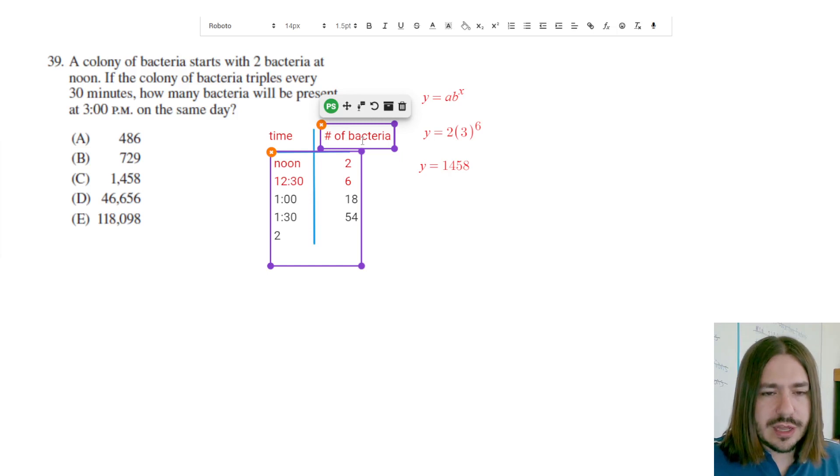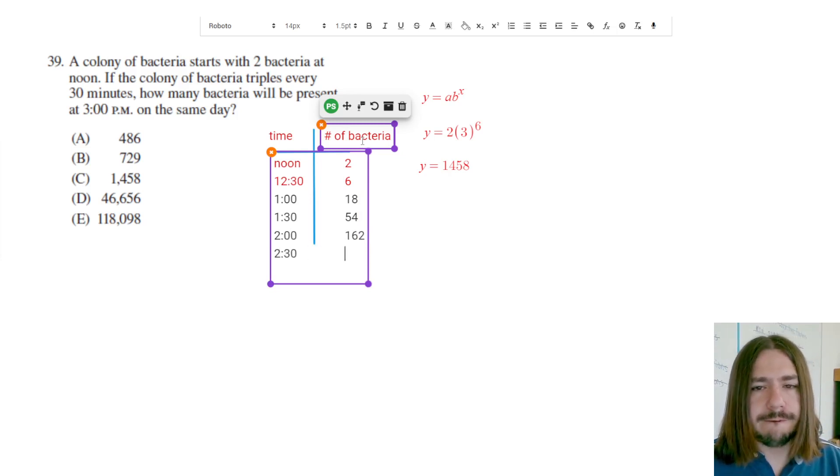So at two o'clock, we can multiply that by three again. Get 162. At 2:30, we are going to multiply that by three, and we get 486.